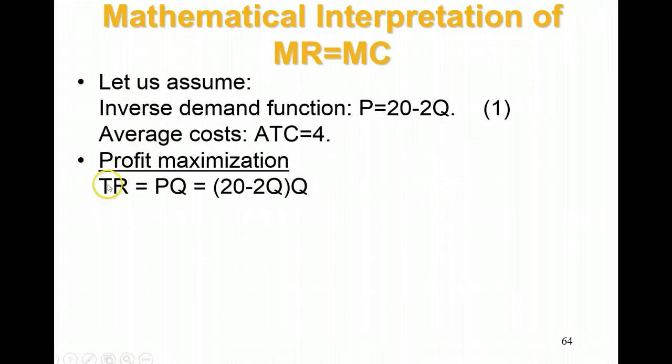Total revenue is P times Q. I've got P, this equation is price. If I multiply this equation times Q, which is the inverse demand curve, I will have total revenue. So all I have to do is distribute Q in this equation: TR equals 20Q minus 2Q squared.